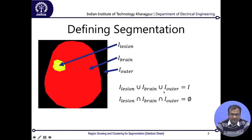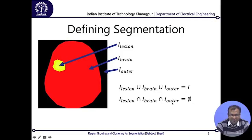The first mathematical definition is that the union of all three segments is supposed to define the image itself. The next definition says that if you intersect between all the regions it should return a null set — meaning there is not a single pixel shared between any two different segments. So the intersection of lesion and brain is a null set, intersection of brain and outer is a null set, and intersection of lesion and outer is also a null set by definition.